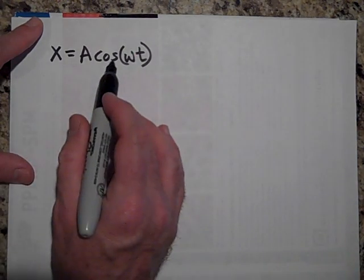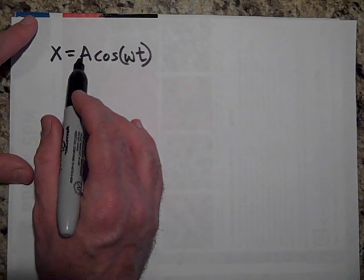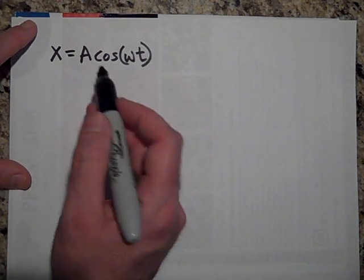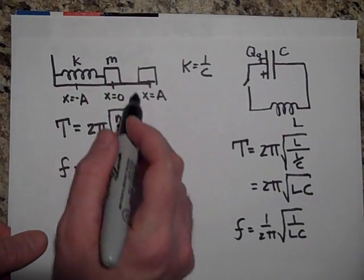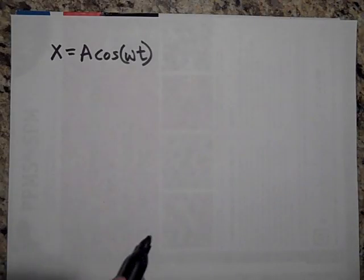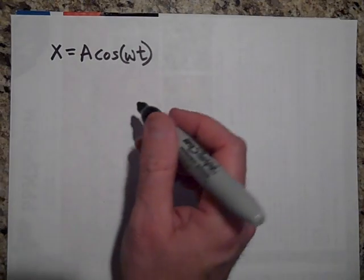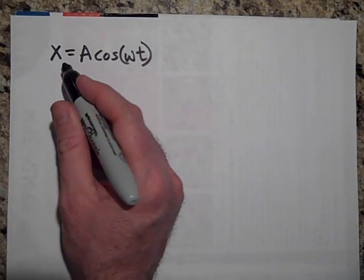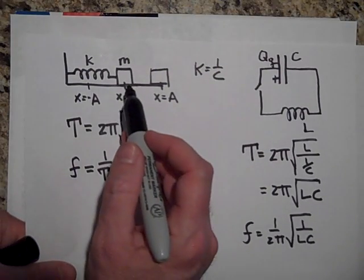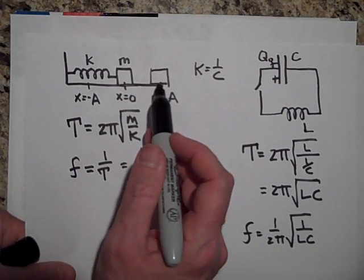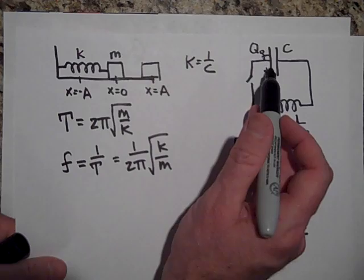And this is assuming that you're starting at x equals A. At time t equals zero, you're starting at A, you're starting all the way out here. Well, the same thing with this. The analog for x—what'd you do to put some energy in here? You pulled it back, you gave it some stretch. What'd you do to get this started? You had to give this some Q.